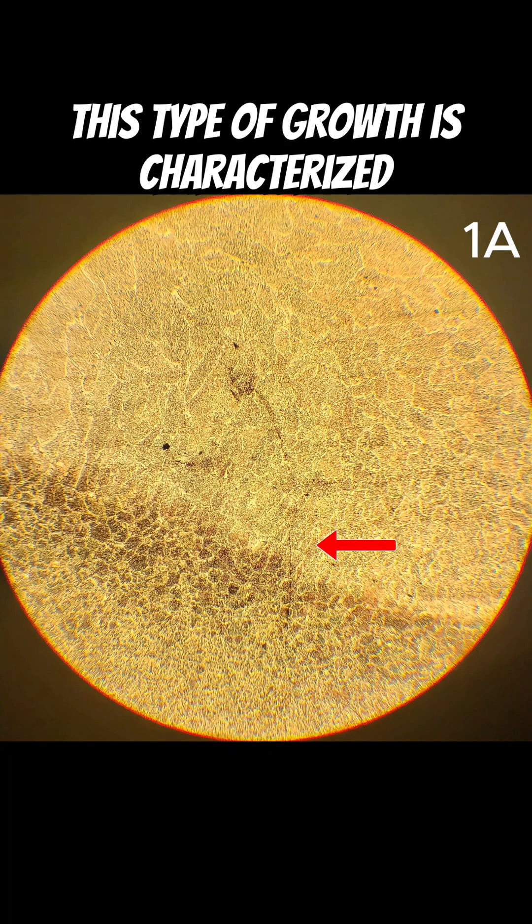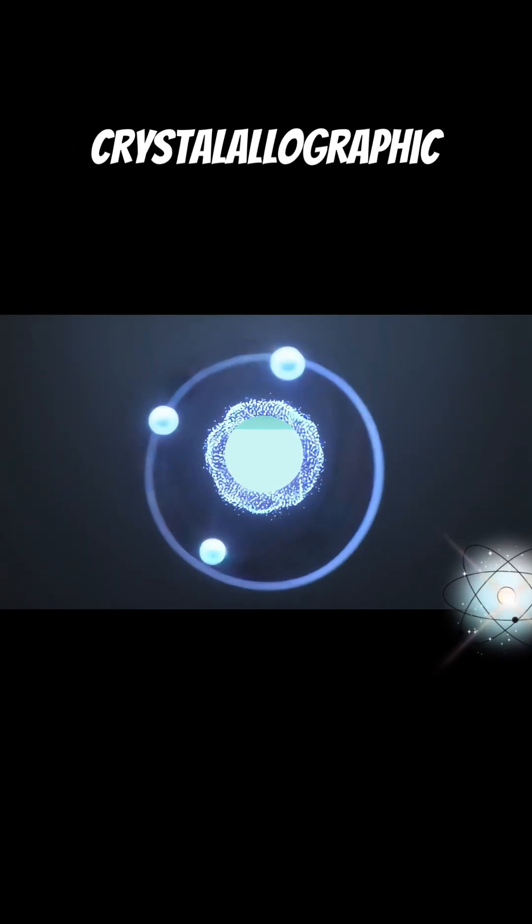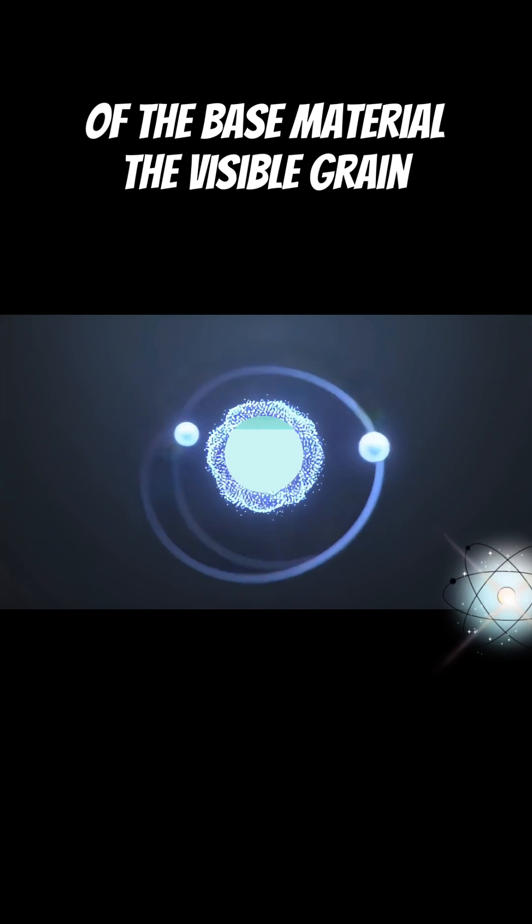This type of growth is characterized by grains extending from the heat-affected zone into the molten weld metal, maintaining the crystallographic orientation of the base material.